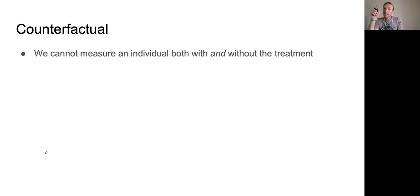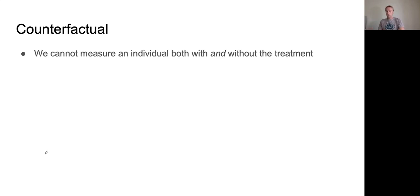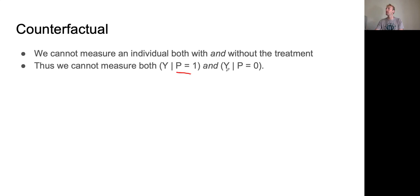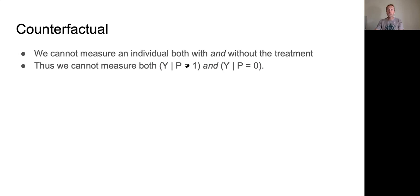But there's a problem here. If somebody gets the treatment, they can't also not get the treatment. There is no way to measure somebody when P equals one and P equals zero simultaneously. Once you give the person treatment, you're in that world; if you don't, you're in the other world. You can't be in both worlds simultaneously. So how do you calculate alpha? There's no real way to calculate it directly.